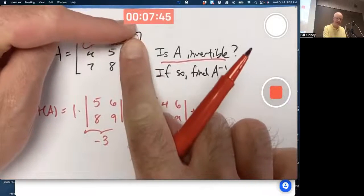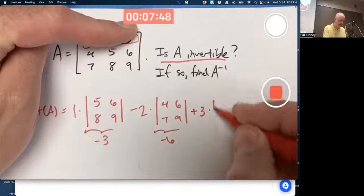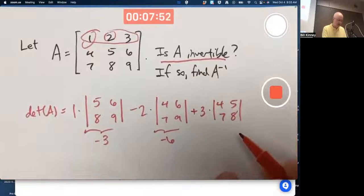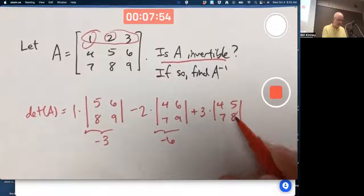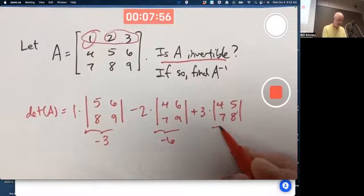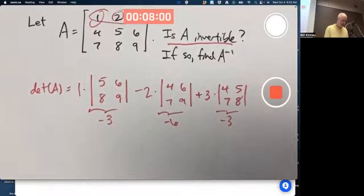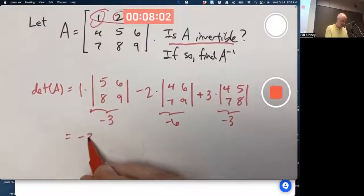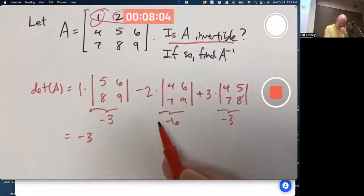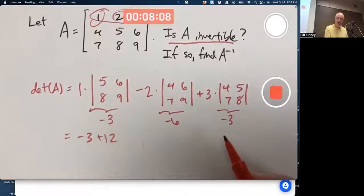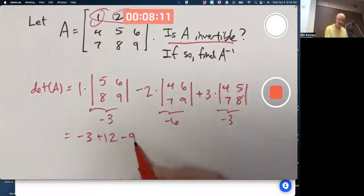This could once again be negative. Four times nine is 36. Seven times six is 42. Yeah, 36 minus 42 is negative six. That is negative. You do have a negative sign there just because that's the method. The signs alternate plus, minus, plus, minus.